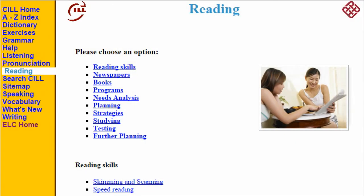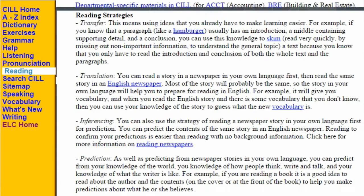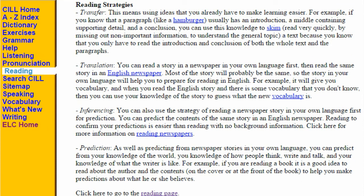So, what do you do when there is no obvious author? In this example, you are focused on the reading strategies part of this web page. However, there is no obvious author. If the web page you are looking at has no author, you can use the title of what you're looking at as a replacement for the author. So in this case, the words 'reading strategies' will be used in place of the author's name.